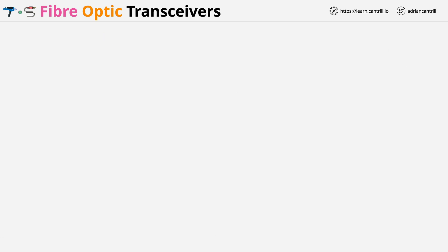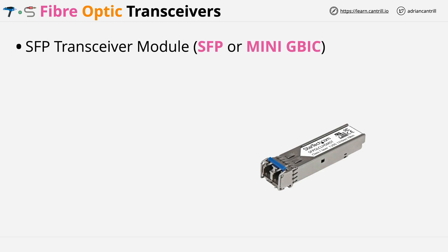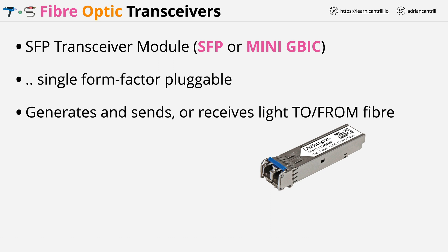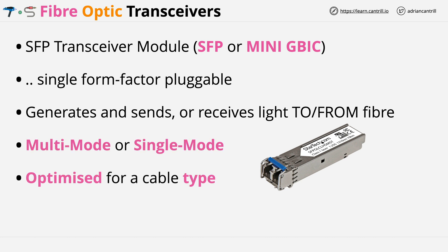Now one final thing I want to cover before we finish up with this lesson, and that's fibre optic transceivers. These are generally the things which you plug into networking equipment, which allows the networking equipment to connect to fibre optic cables. They're known as SFP transceiver modules, also known as SFP or mini GBICs, and this stands for small form factor pluggable. These are the things which generate and send or receive light to and from the fibre optic cable. They plug into networking equipment, have optics inside which generate or detect the light, and are used to translate from data to light and from light to data. Now these transceivers are either multi-mode or single mode, and they're optimised for a specific cable type, so you generally buy a transceiver that's designed to be used with a certain type of cable. The transceivers will need to be the same type on both ends of a fibre optic cable.